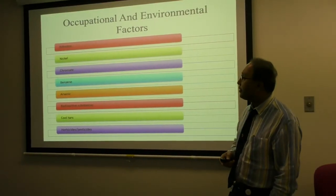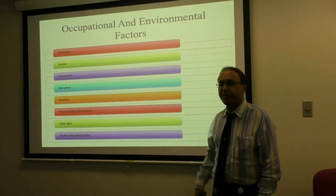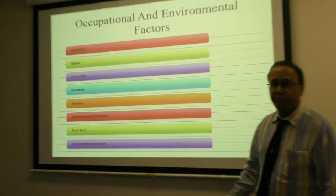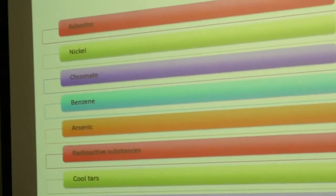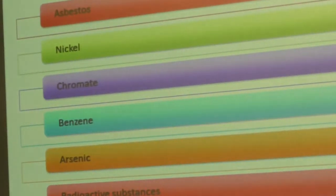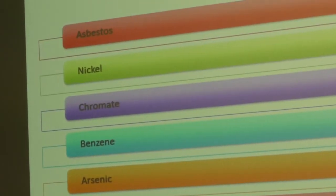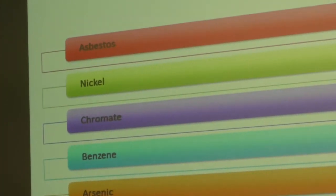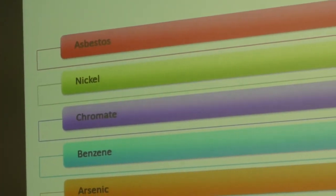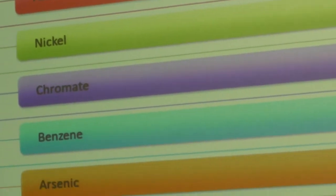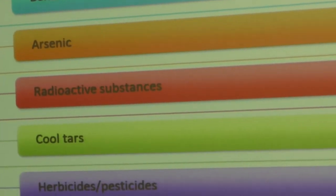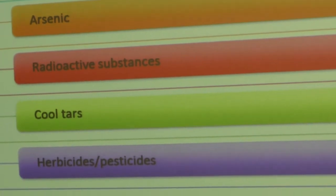Occupational and environmental factors. We have all heard of asbestos, found in the roofing — and it was found in our new children's hospital roof as well. But moving on, this causes lung cancers. Other environmental carcinogens include nickel, chromate, benzenes, arsenic, radioactive substances, coal tar, herbicides, and pesticides. You can see there is an endless list of things that can promote cancer.